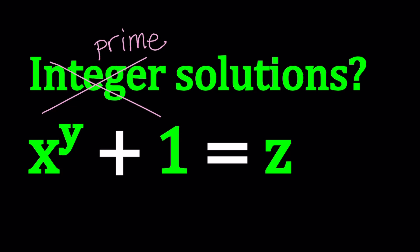So we have X to the power Y plus 1 equals Z, and we're going to be solving for X, Y, and Z values. Alright, let's go ahead and take a look.